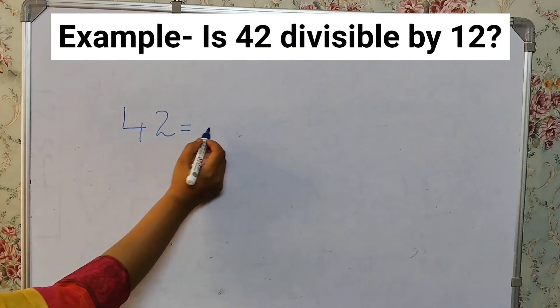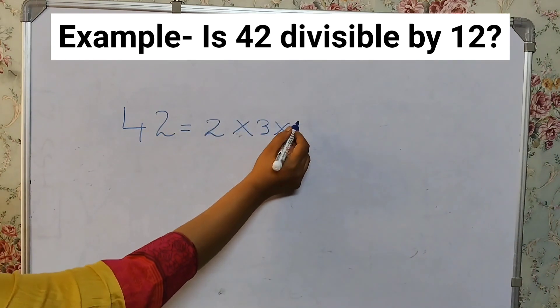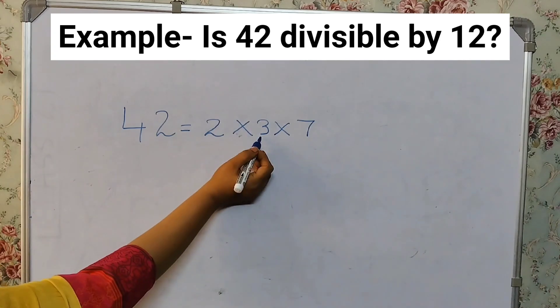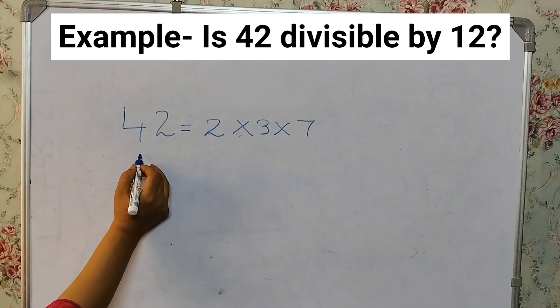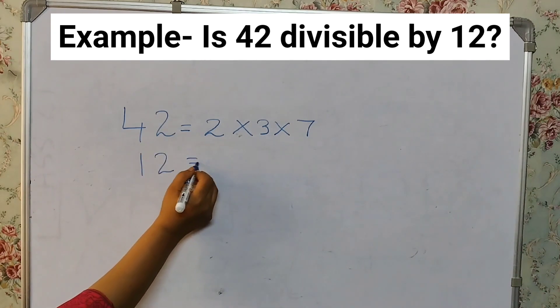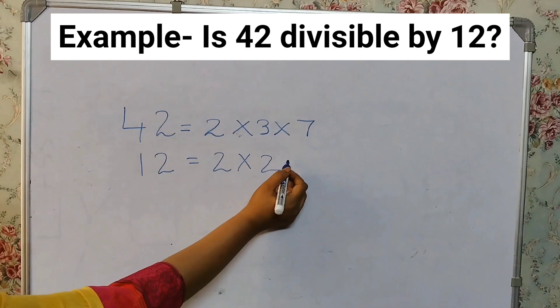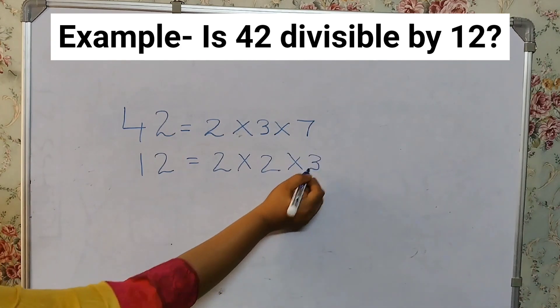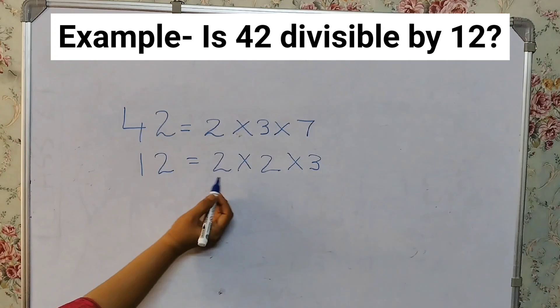That would be 2 times 3 times 7. 2 times 3 is 6, 6 times 7 is 42. And for 12 we can write 2 times 2 times 3. 2 times 2 is 4, 4 times 3 is 12.